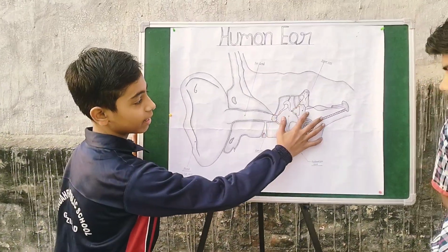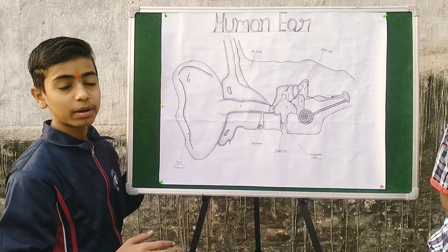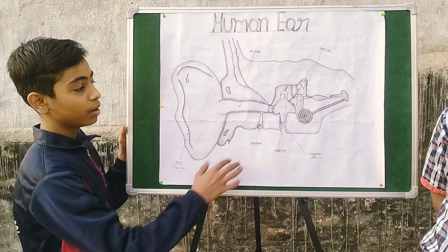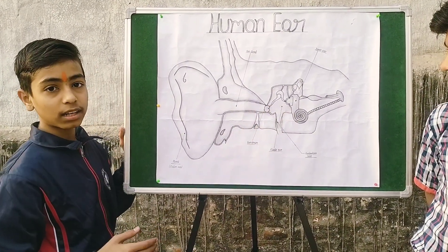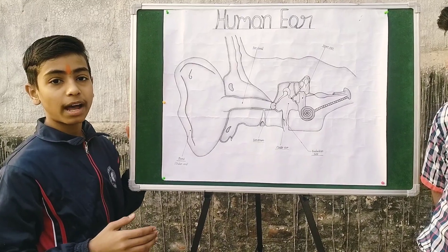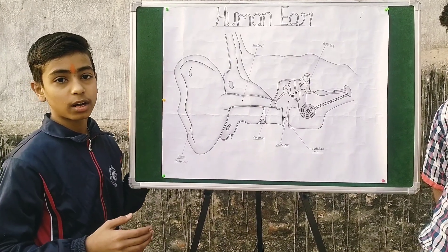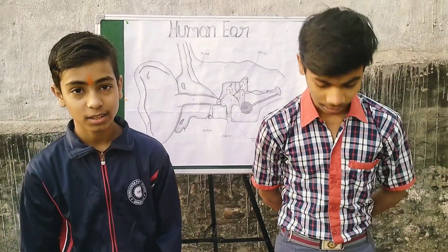The inner ear receives vibrations from the middle ear and converts and translates them to the brain via the auditory nerve. Thank you.